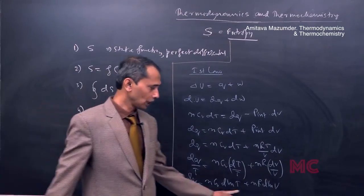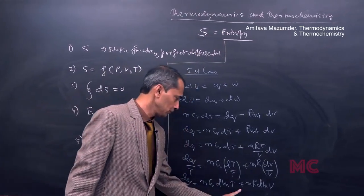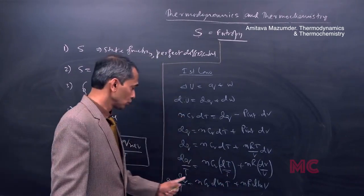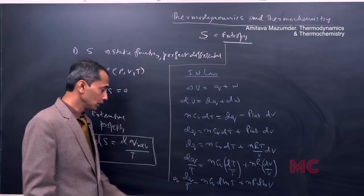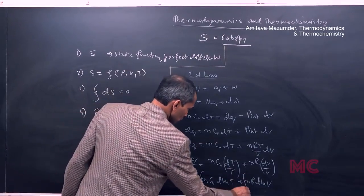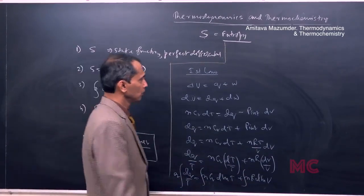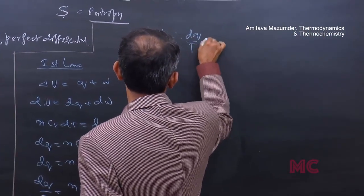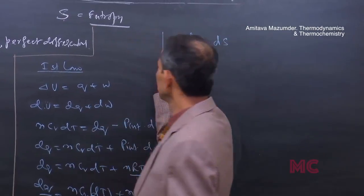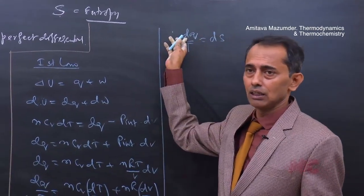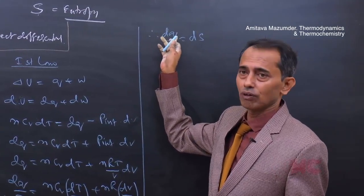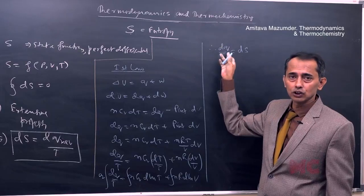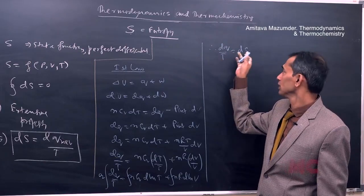On the right-hand side, if you look, this expression is integrable. Since the right-hand side is integrable, the left-hand side must also be integrable. So we can now integrate this. The new term dQ/T will be defined as dS. Note that dQ is a path function and not a state function, so it can't be integrated directly. But the ratio dQ/T is a state function, called dS.